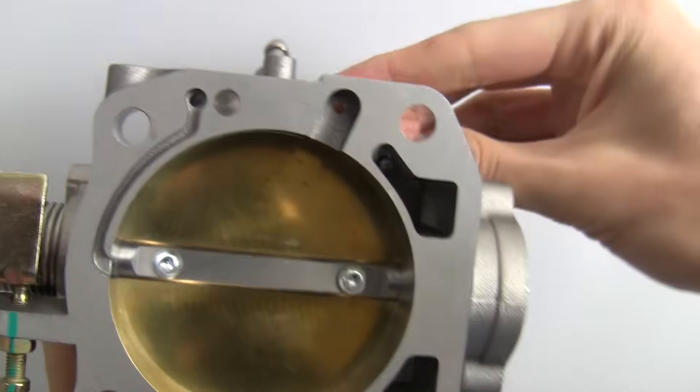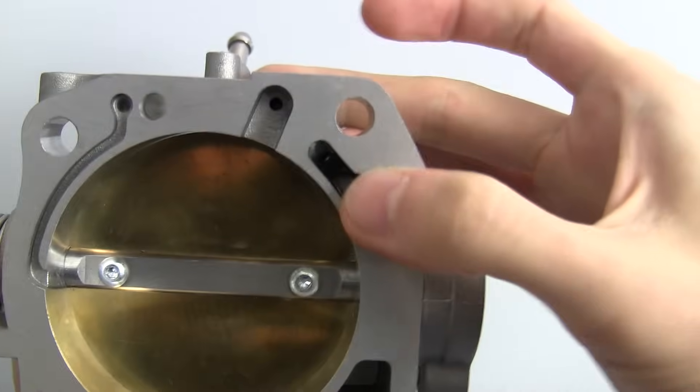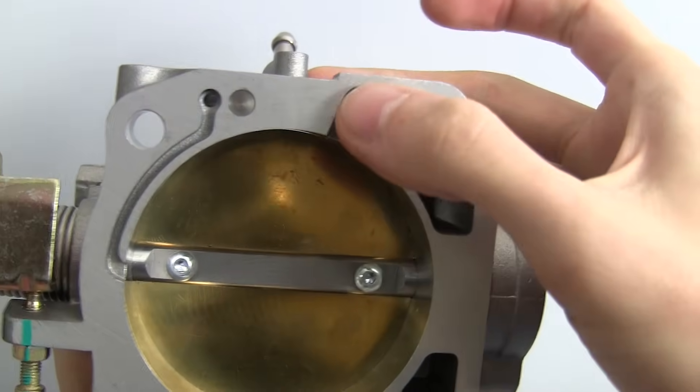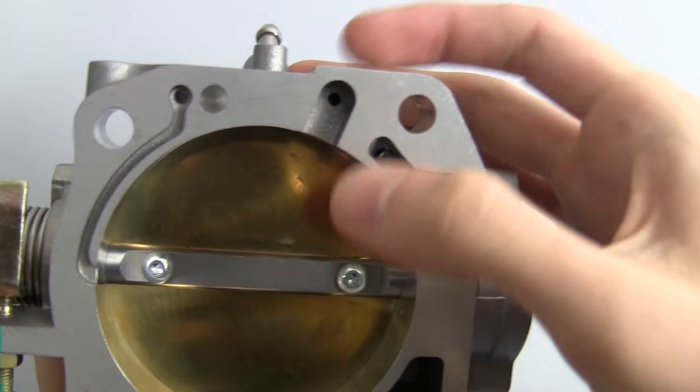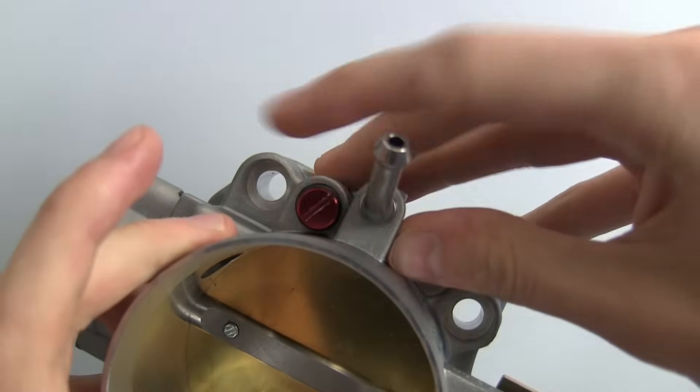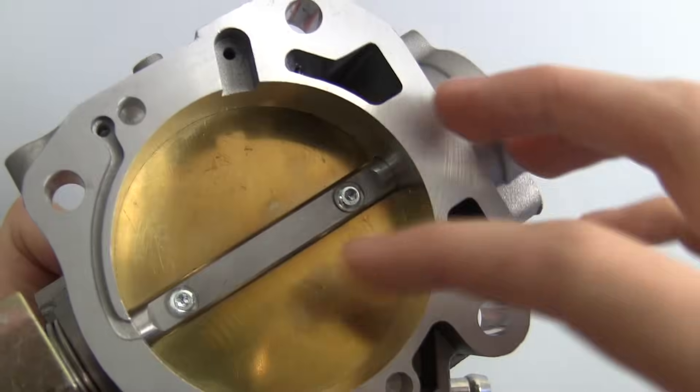So as you put this screw in you're going to be blocking off that port right there and minimizing the amount of air that can come through here. You can adjust it simply by screwing it in more or less and that will adjust the amount of air that can pass around the throttle plate.